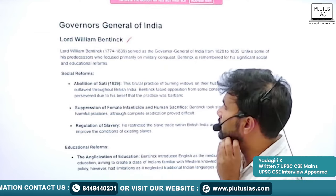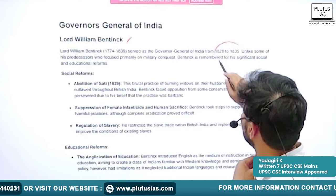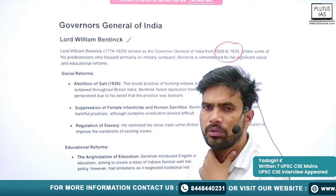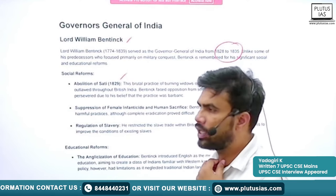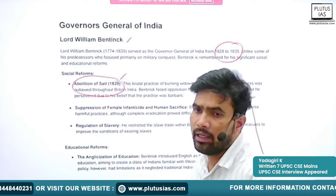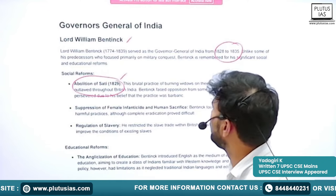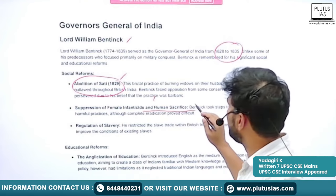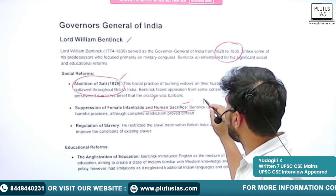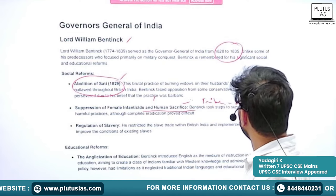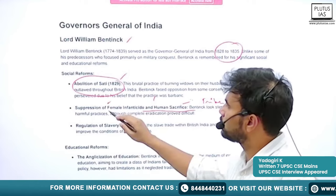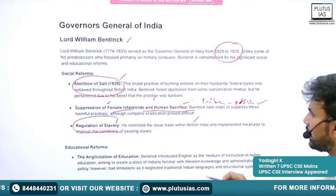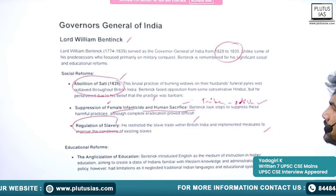Now we will study about the Governors General of India. Lord William Bentinck was the first Governor General of India. His governorship was between 1828 to 1838. He is very well known for his social reforms. Along with Raja Ram Mohan Roy, he brought in the abolition of sati through the Sati Abolition Act of 1829. He also worked for the suppression of female infanticide and human sacrifice — the practice of human sacrifice was going on in some tribes in Odisha. He also regulated the slave trade within British India and implemented measures to improve the conditions of existing slaves.